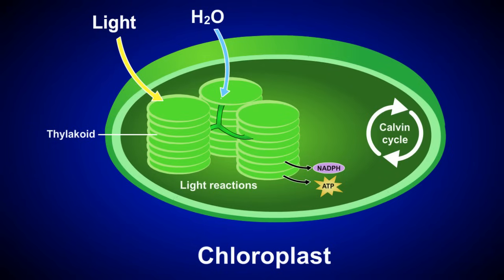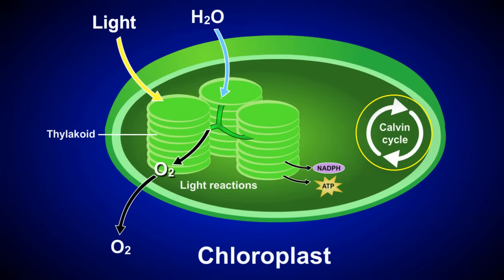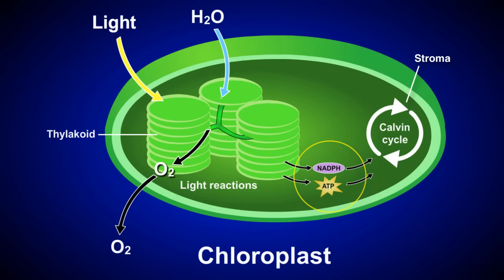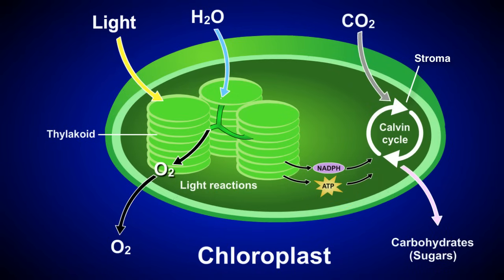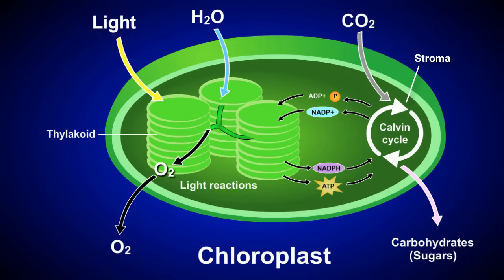Water is also split to replace the high energy electrons, and in the process oxygen gas is released. The Calvin cycle reactions, commonly called the dark reactions or the light-independent reactions, occur within the stroma of the chloroplast. Here, a series of reactions use the ATP and NADPH produced by the light reactions. The Calvin cycle products are then recycled to be used by the next set of light reactions.